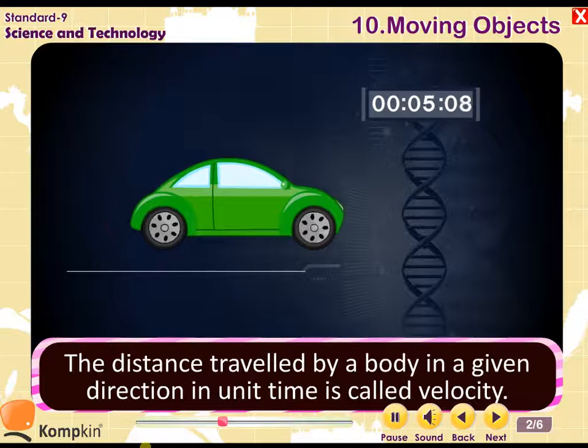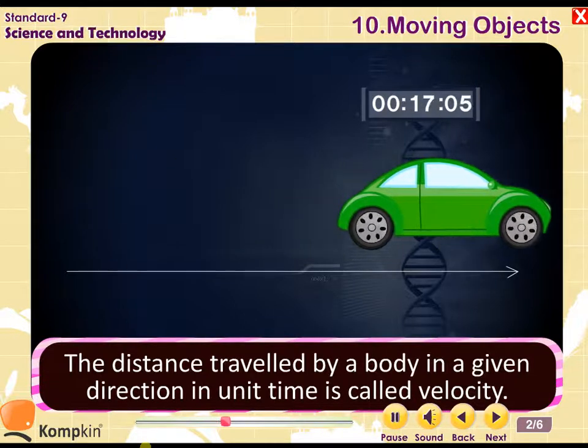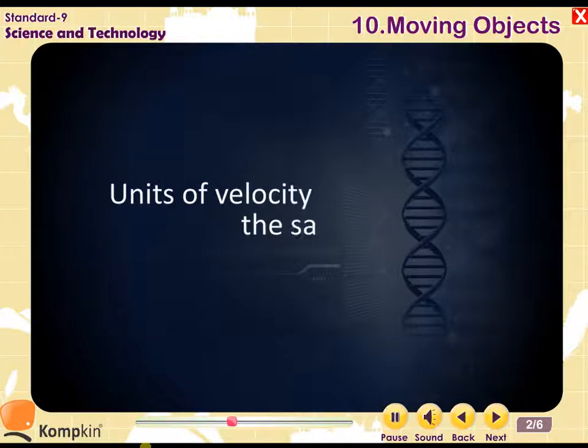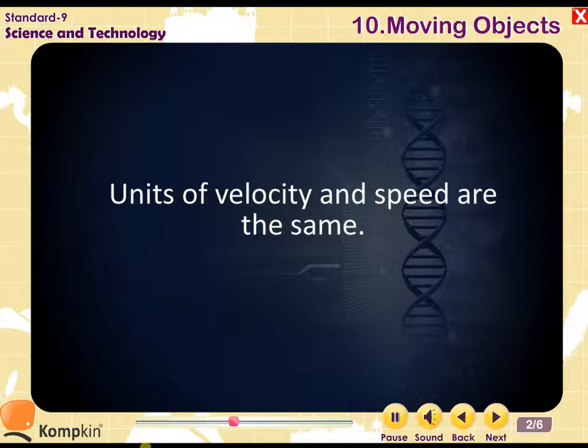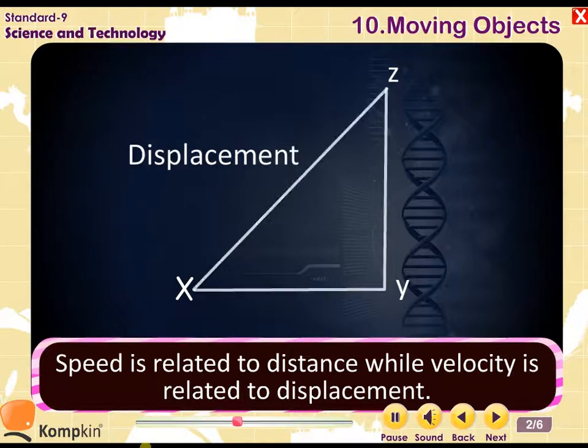The distance traveled by a body in a given direction in unit time is called velocity. Velocity is equal to displacement upon time. Units of velocity and speed are the same. Speed is related to distance while velocity is related to displacement.